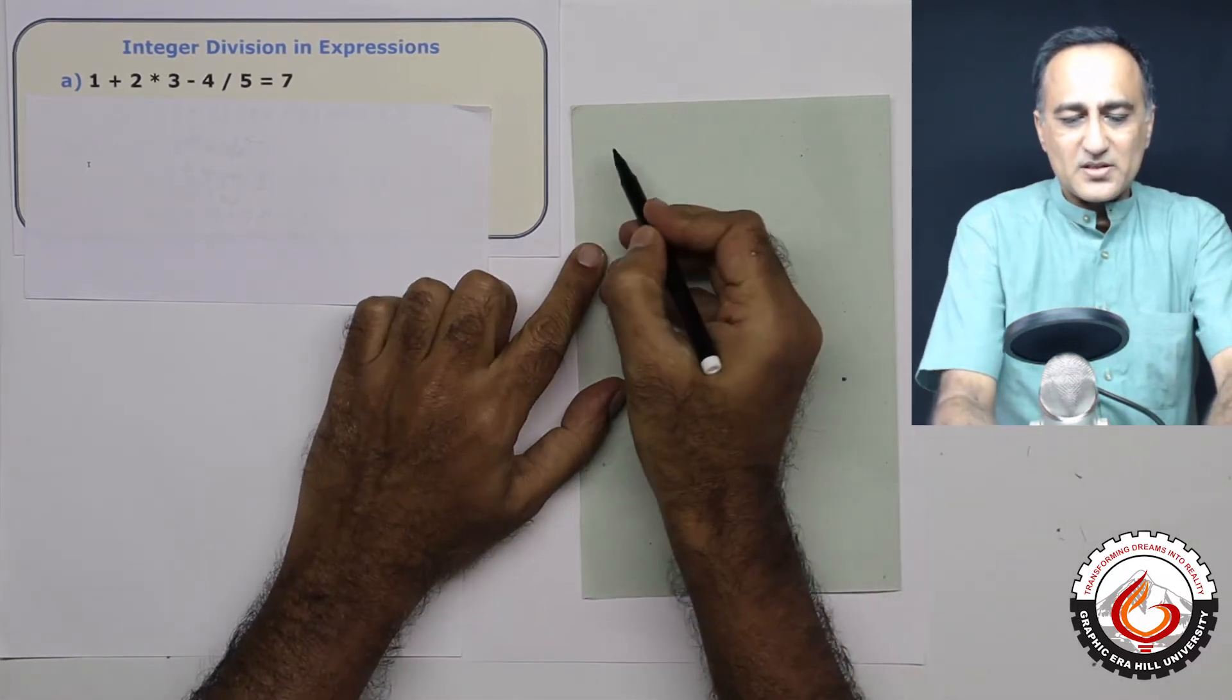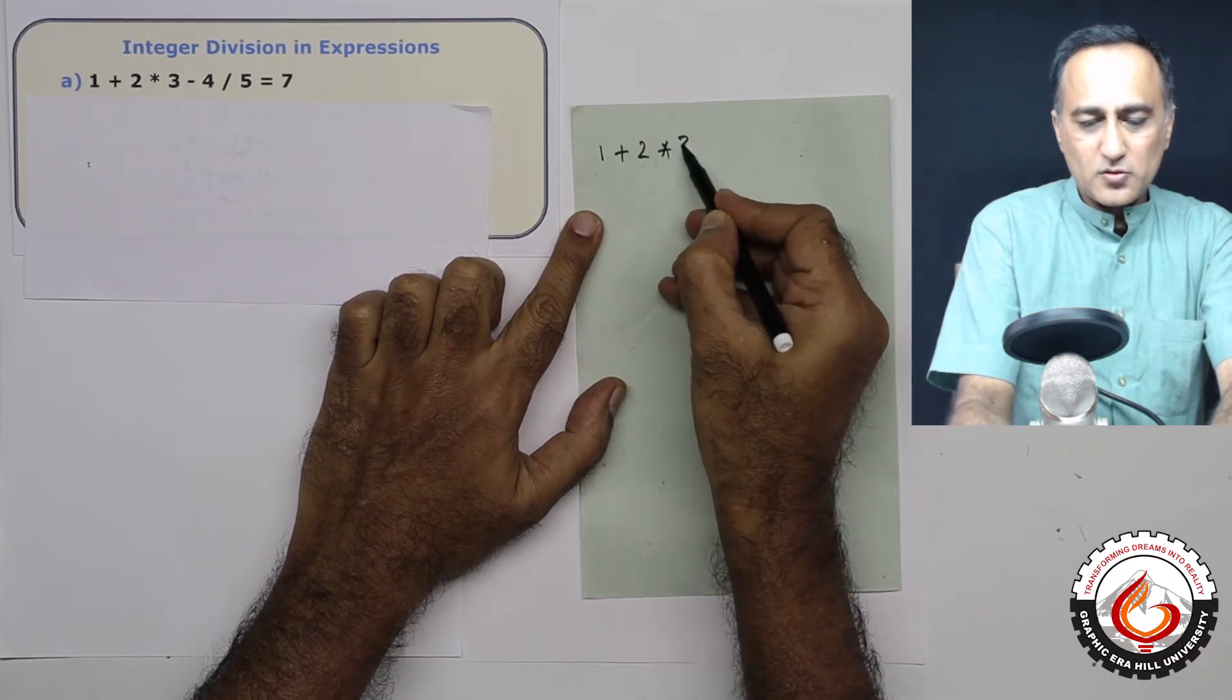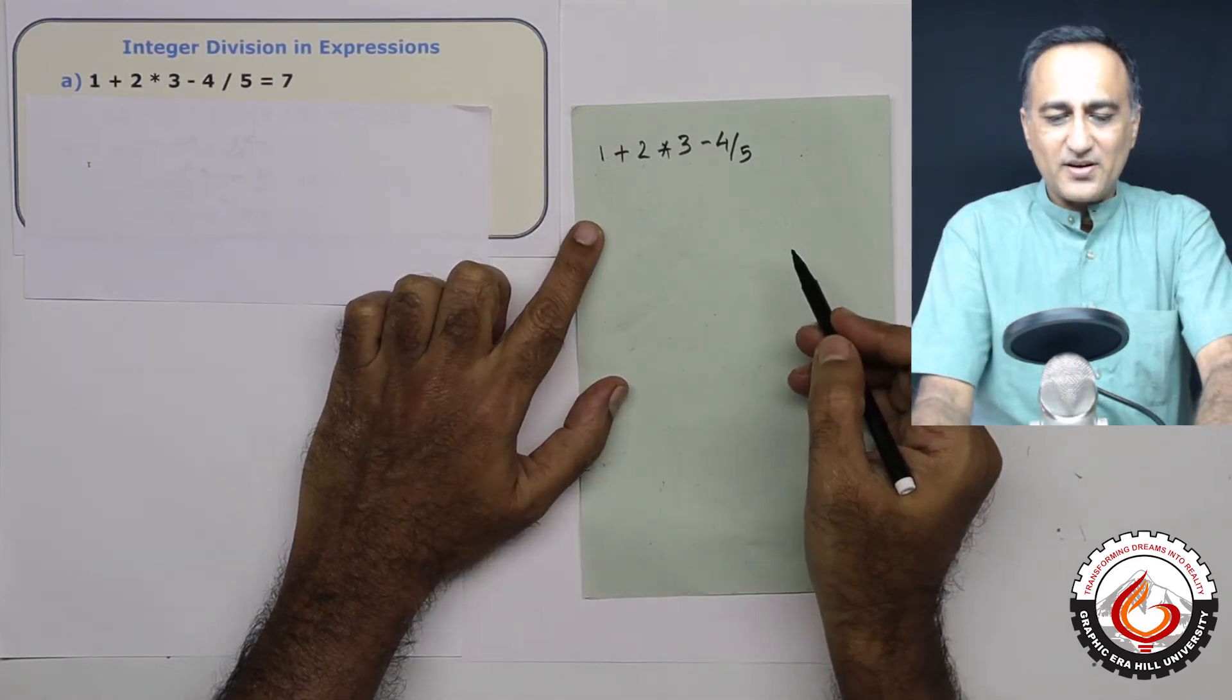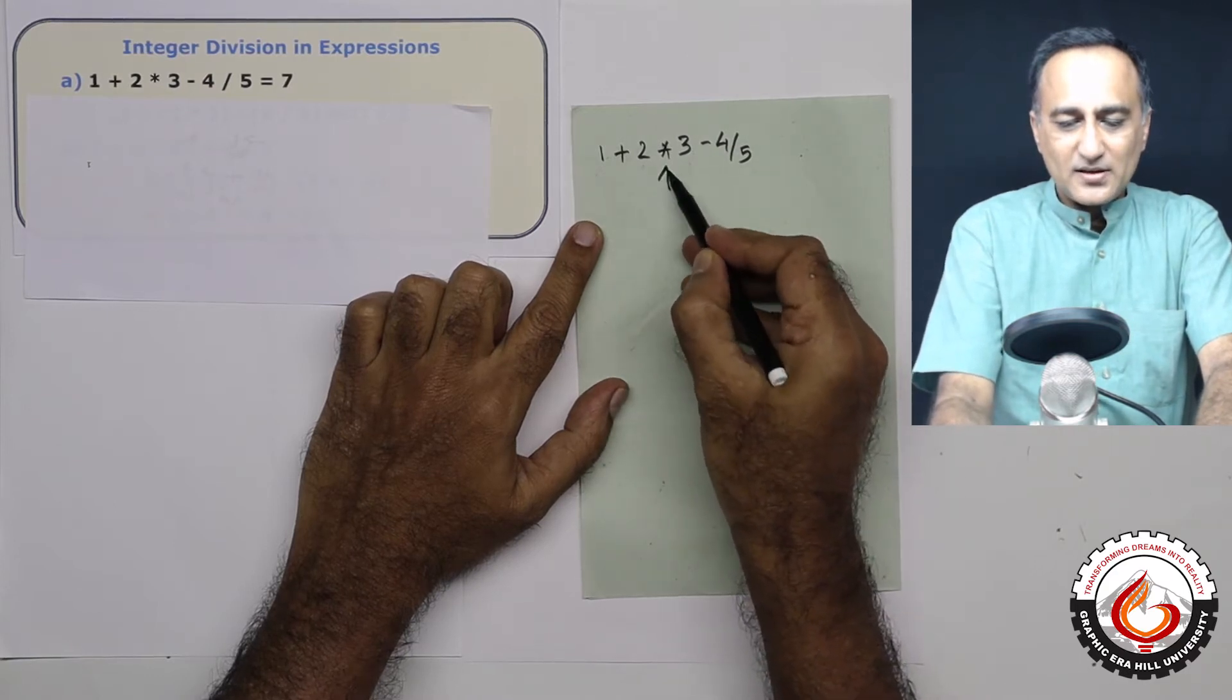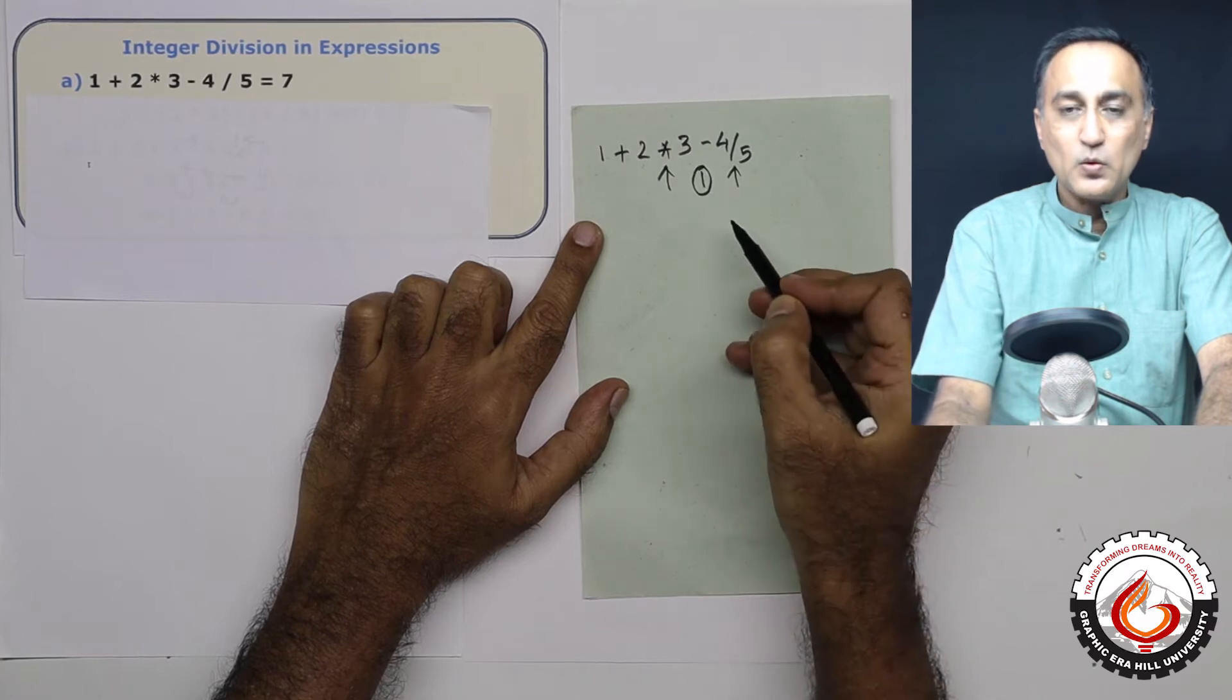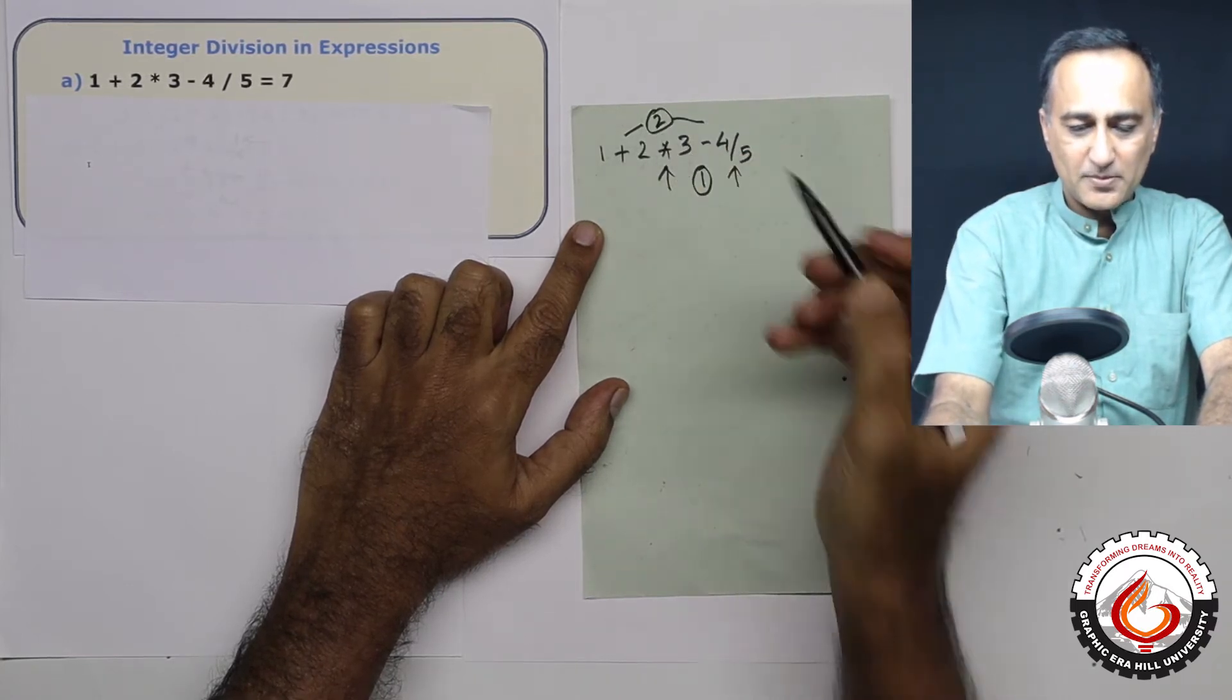So what I'm doing here is I have 1 plus 2 into 3 minus 4 by 5. It says the result is 7. Let's not worry about the result. So if you look at it here, this fellow and this division have got priority number 1, plus and this minus have got priority number 2.